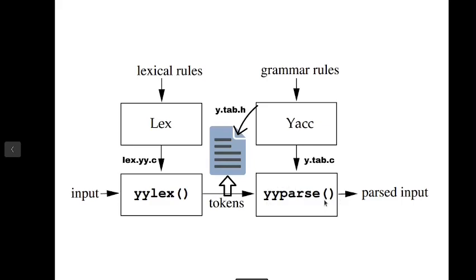yylex passes tokens to the parser. Tokens are actually integer representations which are represented in y.tab.h. When you pass a Yacc script to the Yacc tool, a representation containing the integer values of the tokens as well as y.tab.c is generated.